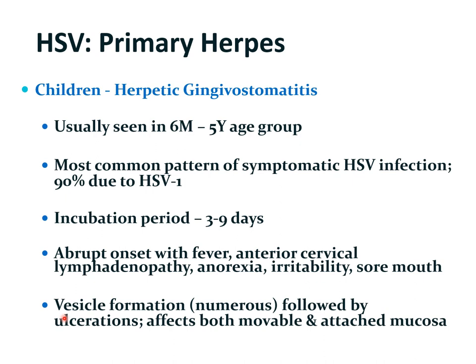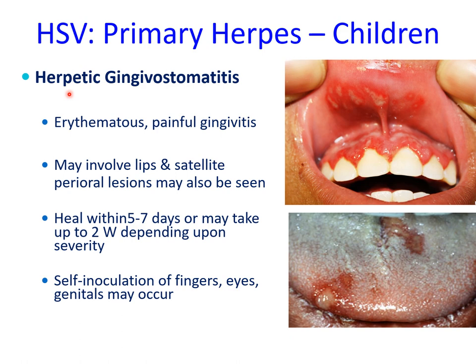Numerous vesicles form which later on ulcerate and they affect both the movable and attached mucosa. Primary herpes in children is characterized by herpetic gingivostomatitis — erythematous painful gingivitis and multiple ulcerations resulting from rupture of vesicles. The labial gingivae are inflamed, there are multiple ulcers involving the labial mucosa and soft tissues, the labial frenum may be involved, and multiple ulcerations on the dorsum of the tongue can also be noted.